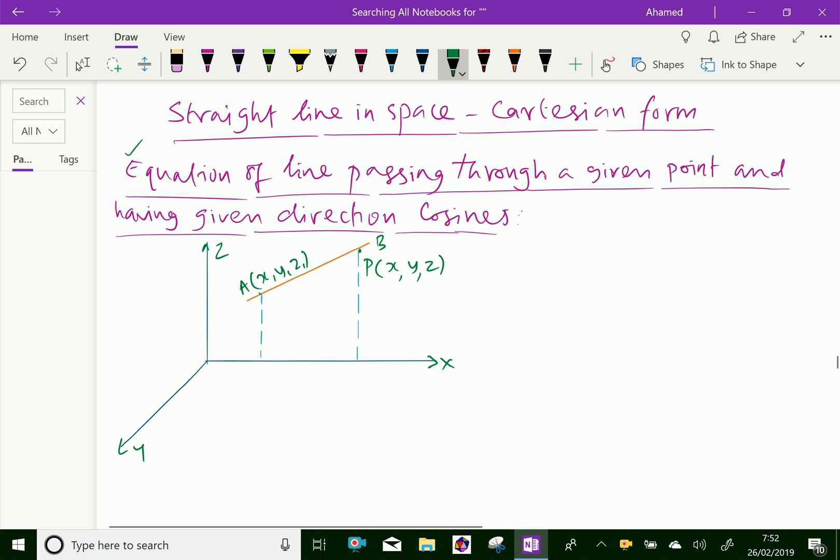Now, let the point have the coordinates X1, Y1, Z1, a given point, and L, M, N are direction cosines of the line.